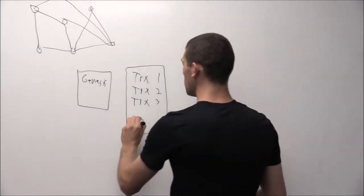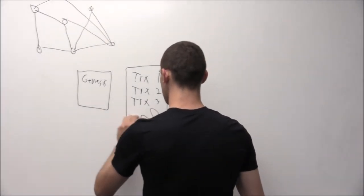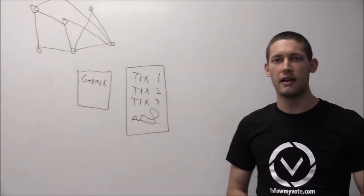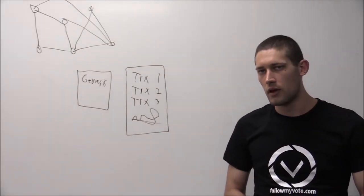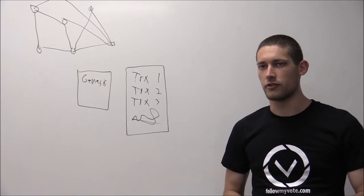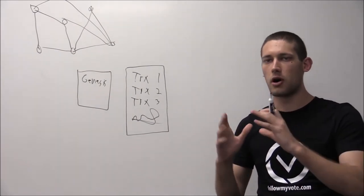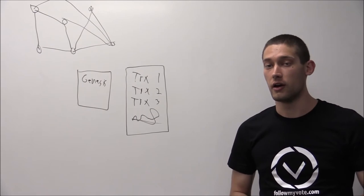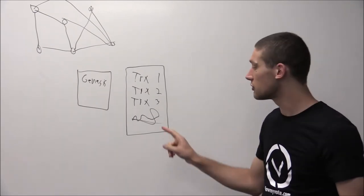And then a cryptographic signature is added to the end of the block. Now a cryptographic signature has several properties which are critical to the security of this database. First of all,